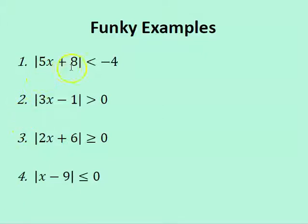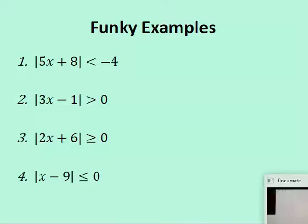Absolute value of 5x plus 8 is less than negative 4. So maybe you saw in the previous videos that when you have less than, the inequality turns into an and inequality. So maybe you'll go through the motions of writing this as an and inequality and solving, and you might get some solutions. However, if you're not careful, those solutions might not be correct. So let's take a look at what this statement means.